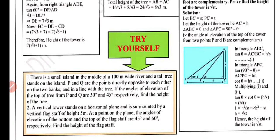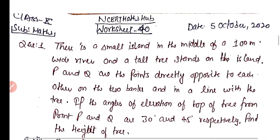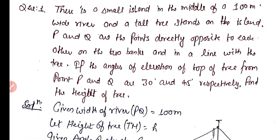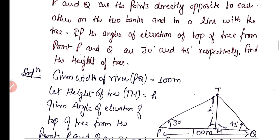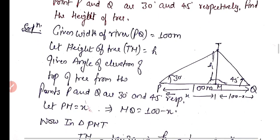Now we have two practice questions. Question 1: There is a small island in the middle of a 100-meter wide river and a tall tree stands on the island. P and Q are points directly opposite each other on the two banks and in line with the tree. The angles of elevation of the top of the tree from points P and Q are 30° and 45° respectively. Find the height of the tree.